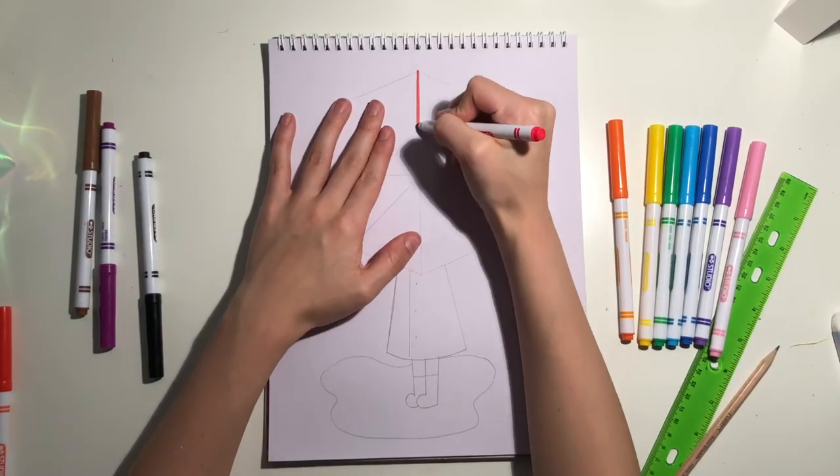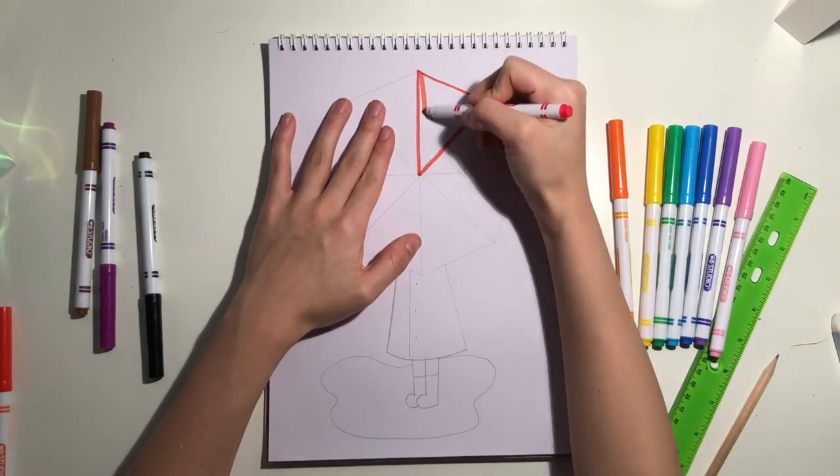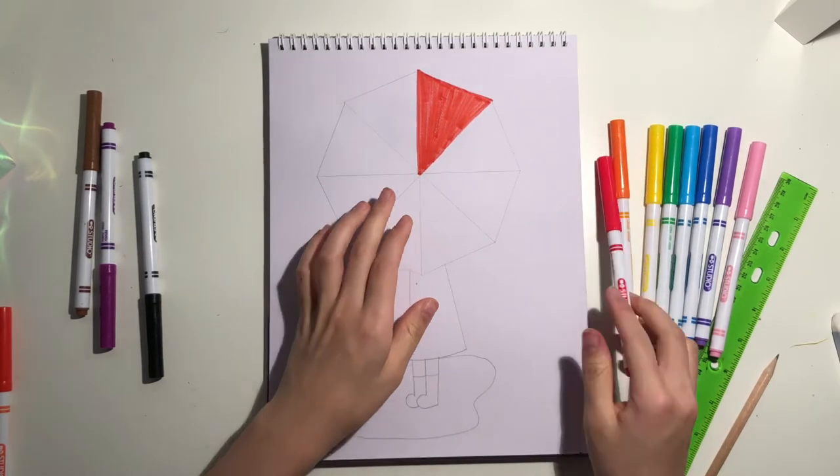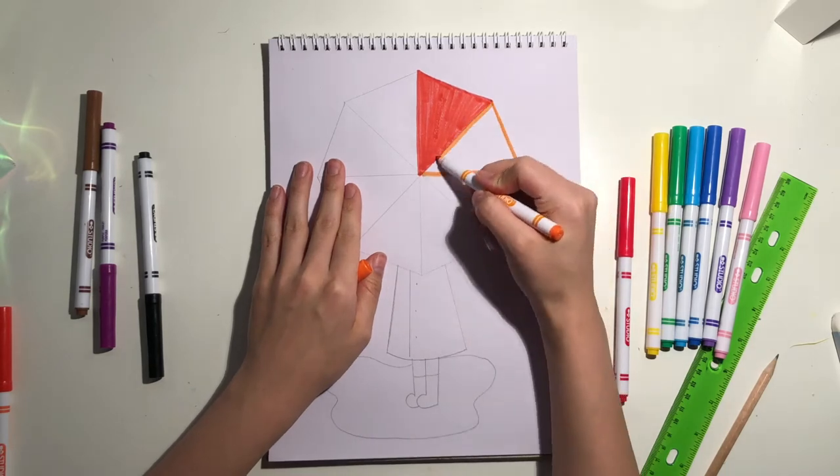Starting with the top right quadrant going clockwise, we are going to fill in one triangle per color for all the colors of our color wheel.